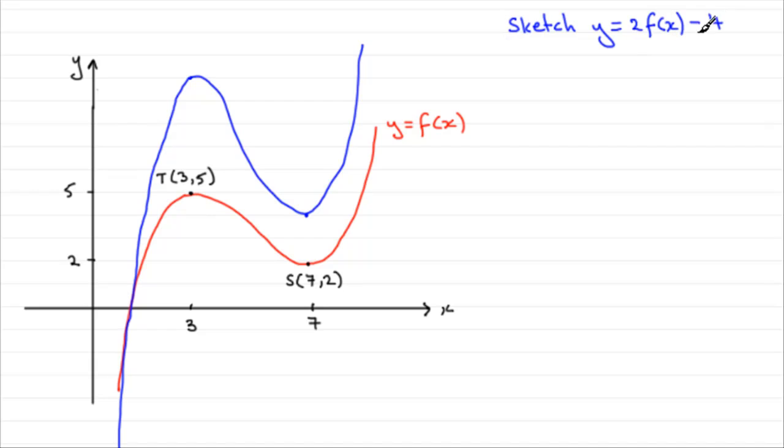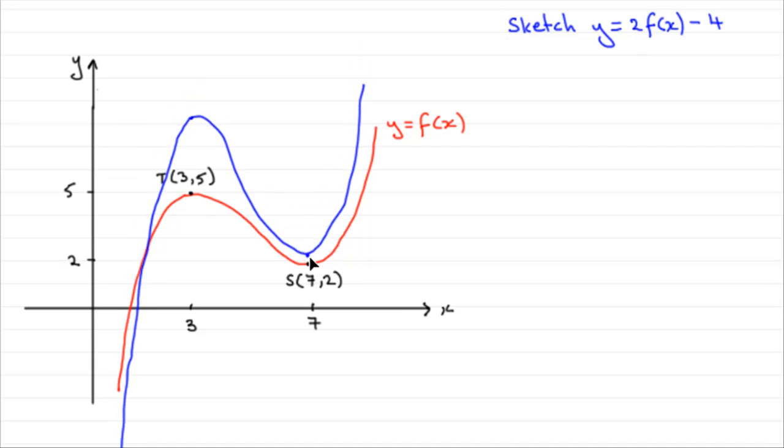Now we need to subtract 4. And what that means is that the graph gets translated 4 units downwards parallel to the y axis. Well, we already knew that this point here was at 7, 4. So if we pull this down 4 units, it's going to drop onto the x axis. So let's just do that. We'll pull this graph down. We'll take it from here, pull it down onto the x axis.